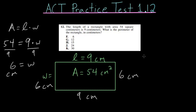To find the perimeter, we just have to add all of these lengths together. So we have 9 plus 6 plus 9 plus 6. When we add this together, we get 30. So 30 centimeters is our final answer, and we can circle this choice here, letter K.